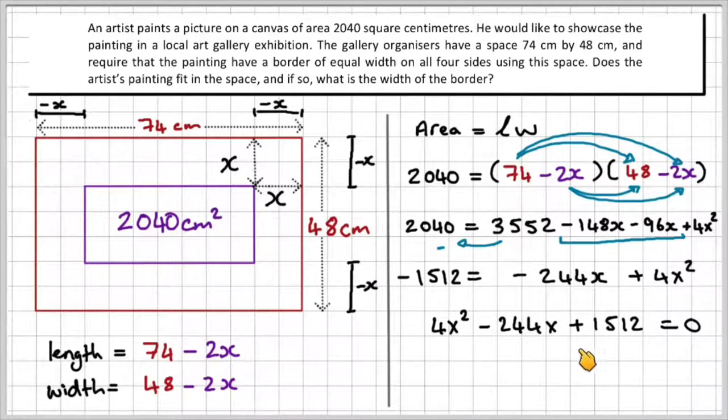What I notice here is that there's a common factor, a common factor of 4. So you can remove the common factor of 4. That leaves us with X squared minus 61X plus 378, which equals 0.